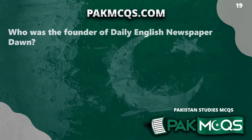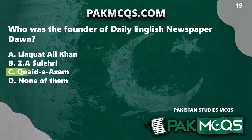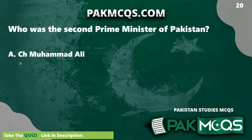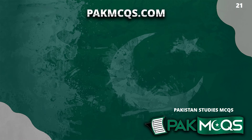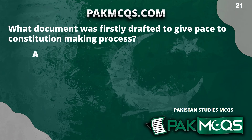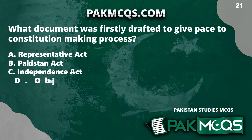Who was the founder of the daily English newspaper Dawn? Quaid-e-Azam Muhammad Ali Jinnah. Who was the second Prime Minister of Pakistan? Khawaja Nazimuddin. What document was first drafted to give pace to the constitution-making process? The Objectives Resolution.